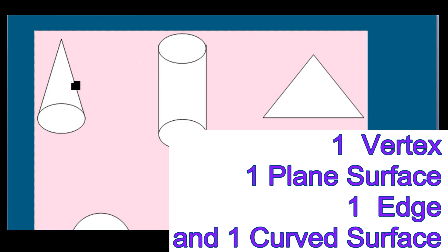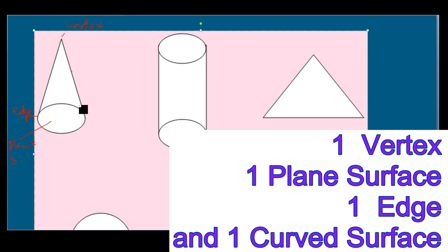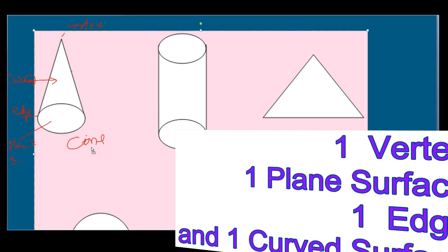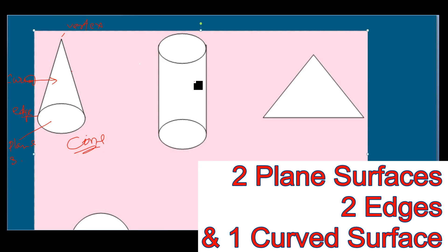This is called a cone. A cone has a vertex — this one is the vertex. It has a plane surface at the base and an edge. It also has a curved surface. If you really look at a cone, you can realize this face is like a curve, just like an egg or ball. So this is called a cone.